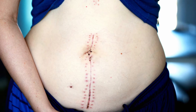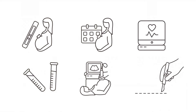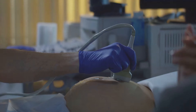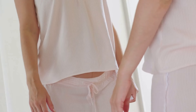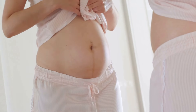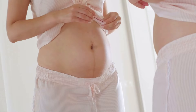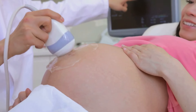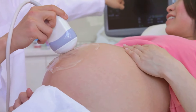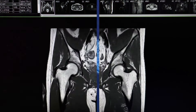The incidence of CSP is on the rise due to the increasing number of cesarean sections. Early and accurate diagnosis is vital. For women with a history of cesarean delivery presenting with atypical bleeding, a high index of suspicion is necessary. Ultrasound, especially transvaginal with color Doppler, is the gold standard for diagnosing CSP. If there's any doubt, MRI can also be used.